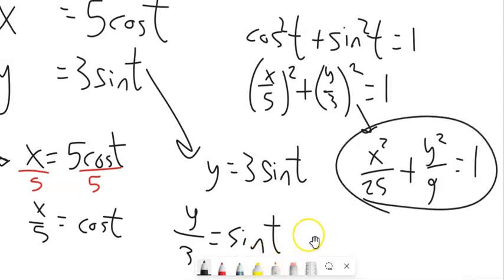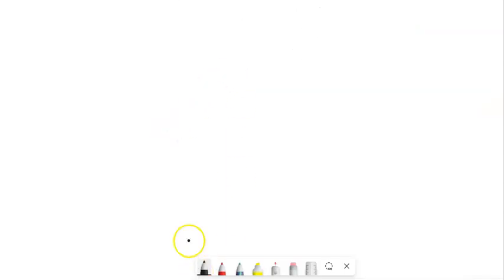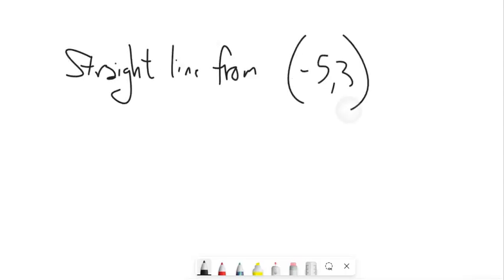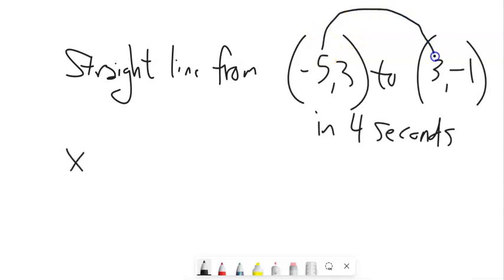There's one other thing I want to talk about with this section. And that's writing something in parametric form given some information. So I've got a straight line that's going from this point to this point. And it does it in 4 seconds. So I have an x and a y that's changing as t changes. So t is going to be my time. So let me just think about x for now. So x is going from negative 5 to 3 as t goes from 0 to 4. So basically, I have a linear relationship here. x is just changing at this constant rate, straight line, from negative 5 to 3 as t goes from 0 to 4.